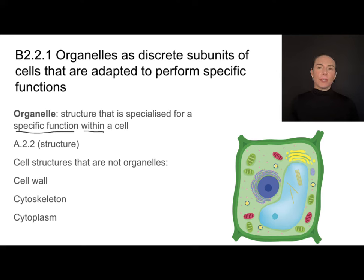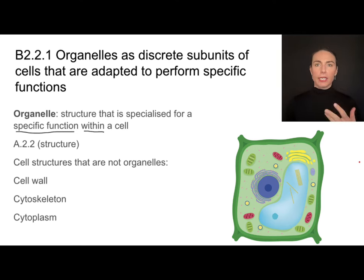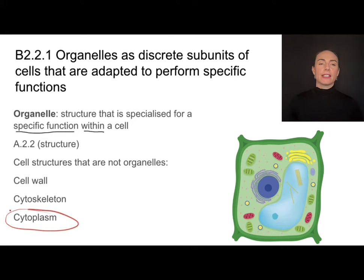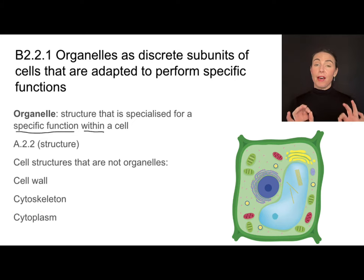There are some cell structures that are important, but just are not considered an organelle. So things like the cell wall or the cytoskeleton or even the cytoplasm — they're all important, but they are not an organelle.